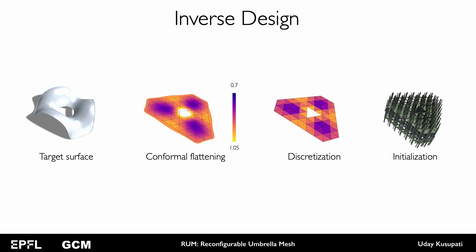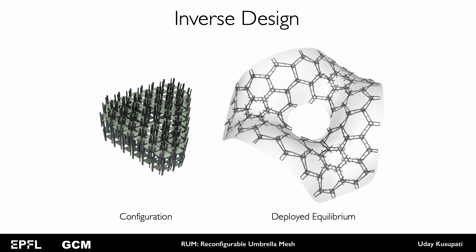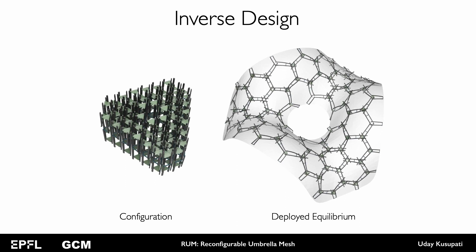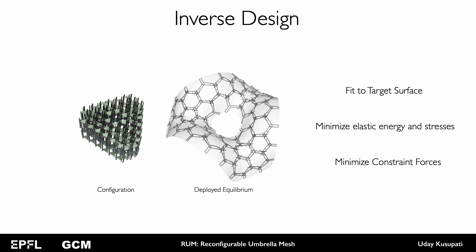This helps us find an initial solution to the inverse design problem. While this initial solution already deploys close to the target surface, we perform numerical optimization using sensitivity analysis to optimize the fidelity to the target surface among several other objectives. Observe that the space that we optimize in is the configuration space of a RUM, and we are literally navigating through several possible deployments of the RUM towards the best fit. Notice that each iteration of this optimization requires computing the deployed equilibrium. We want the deployed state to fit to the target surface, minimize its elastic energy and stresses, and also minimize the constraint forces. This requires an efficient simulation framework.